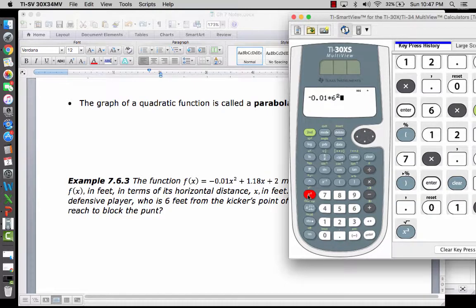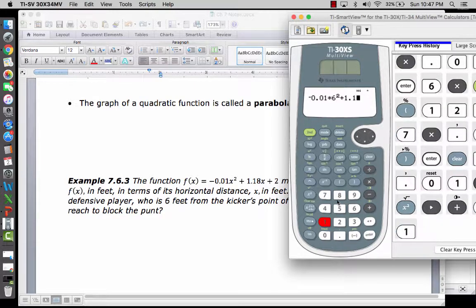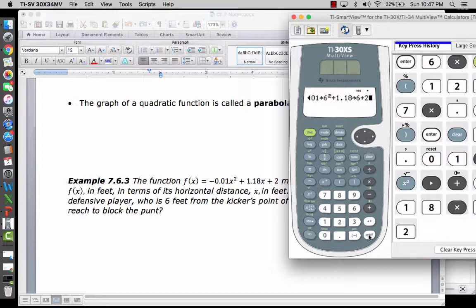Arrow out of that, and then I'm going to do plus 1.18 times 6 plus 2. So that's the function. Plug that all in in one line, and I get 8.72 feet.